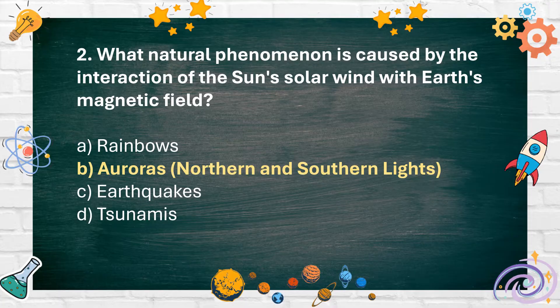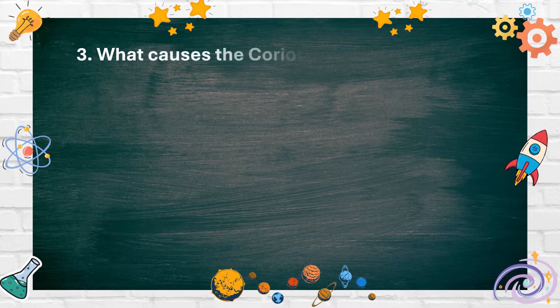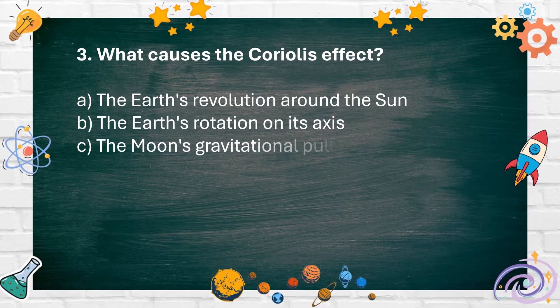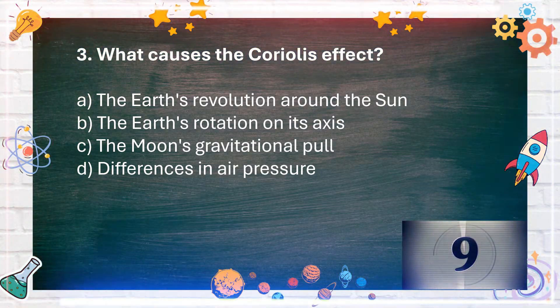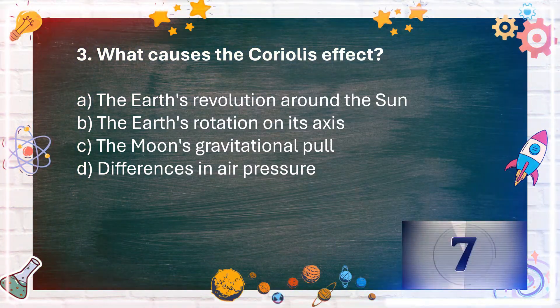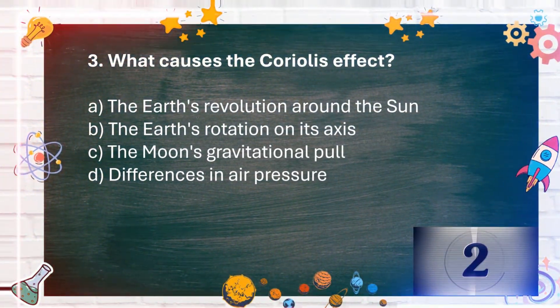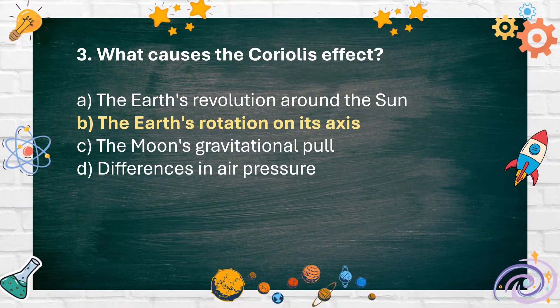Number 3: What causes the Coriolis effect? A. The Earth's revolution around the Sun, B. The Earth's rotation on its axis, C. The Moon's gravitational pull, D. Differences in air pressure. The answer is B. The Earth's rotation on its axis.